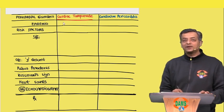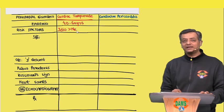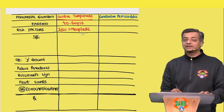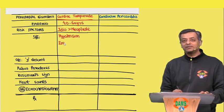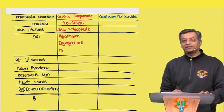Cardiac tamponade commonly occurs between 40 to 60 years of age. The most common cause of pericardial effusion is idiopathic, followed by neoplastic effusion, so the history of breast cancer is an important clue. Patients present with hypotension, engorged neck veins, and diminished heart sounds — the classic Beck's triad of cardiac tamponade.